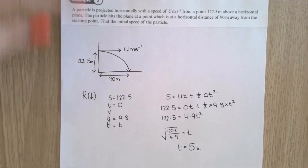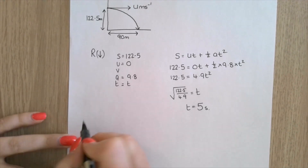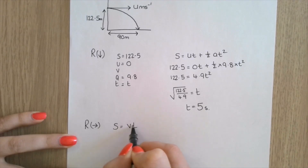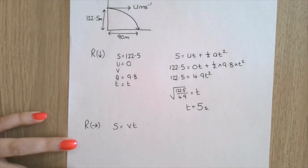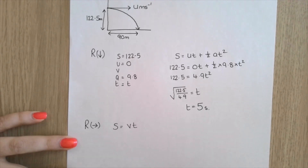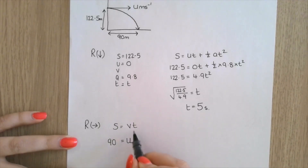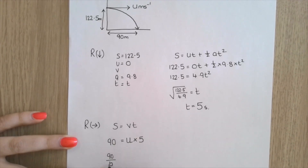Now resolving horizontally: s = vt, so 90 = u × 5, therefore u = 90/5 = 18 metres per second.